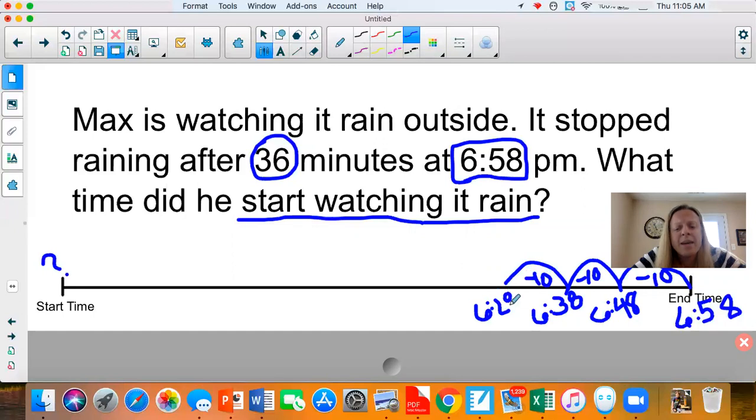Now, am I done? Let's see how many minutes I have subtracted. 10, 20, 30. Does my problem say 30? No, my problem says 36. So I am not done. From this point, you could subtract just six. Or if you're not sure, you could do a subtraction hop of five. 6:28 minus five is 6:23.